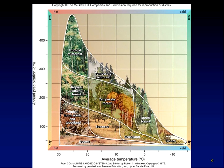We have discussed primary productivity and photosynthesis. The most favorable environment for photosynthesis produces the most primary productivity. Most warm environments are ideal, producing lots of plant biomass, which in turn produces more animal life. So this chart illustrates this concept.